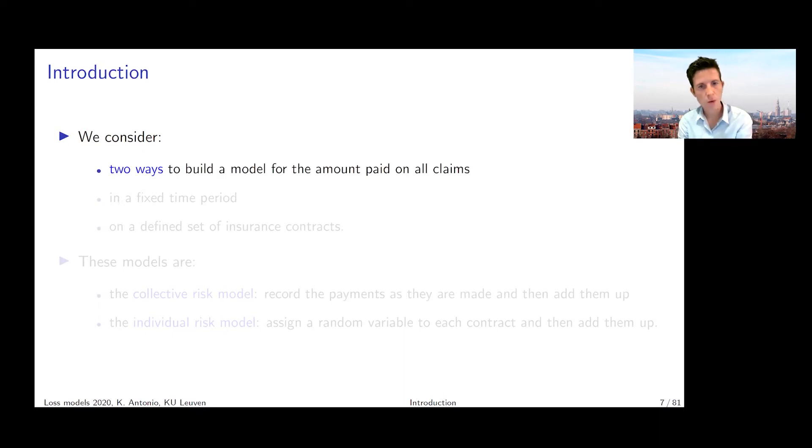What we want to do is consider in this chapter two broad ways to build a model for the amount paid over all claims. And you should see this all claims can be on an individual insurance policy, all claims reported during a specific period of exposure, or it could be all claims reported on a complete portfolio of insurance contracts.